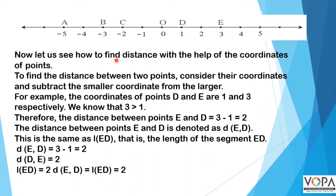To find the distance between two points, consider the coordinates and subtract the smaller coordinate from the larger. For example, the coordinates of points D and E are one and three respectively. Since three is greater than one, the distance between E and D equals three minus one, which equals two. The distance of ED is the same as the length of segment ED.